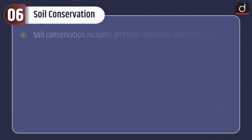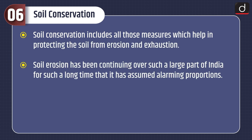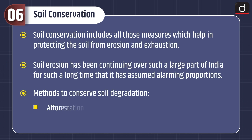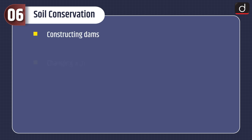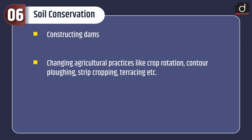Soil conservation includes all those measures which help in protecting the soil from erosion and exhaustion. Soil erosion has been continuing over such a large part of India for such a long time that it has assumed alarming proportions. Methods to conserve soil degradation include afforestation, checking overgrazing, constructing dams, and changing agricultural practices like crop rotation, contour plowing, strip cropping and terracing.